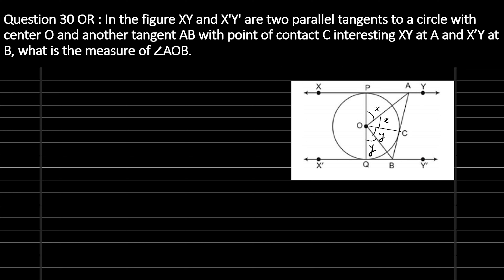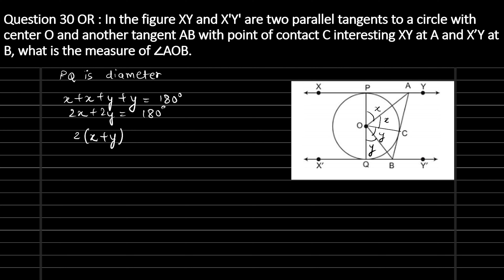Now, since PQ is a line segment passing through the center, PQ is a diameter and it is a straight line, so the angle it makes at the center will be 180 degrees. Looking at the diagram: x plus x plus y plus y equals 180 degrees, which implies 2(x + y) equals 180 degrees.